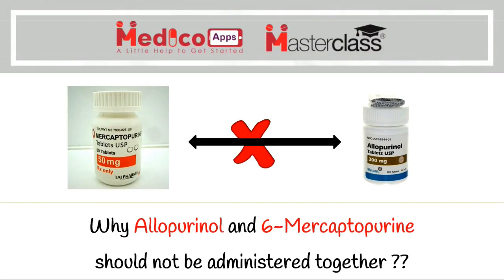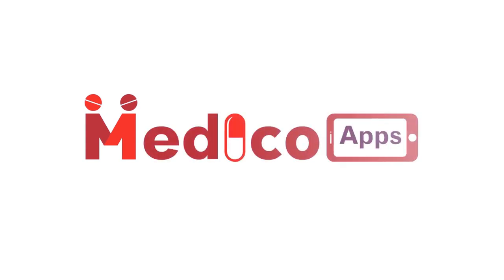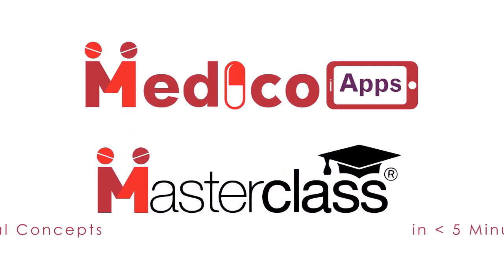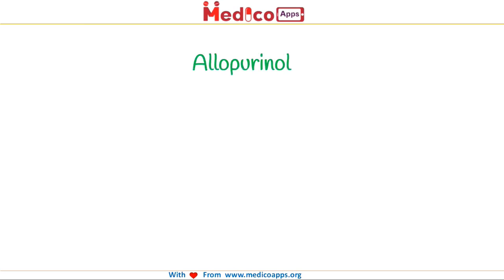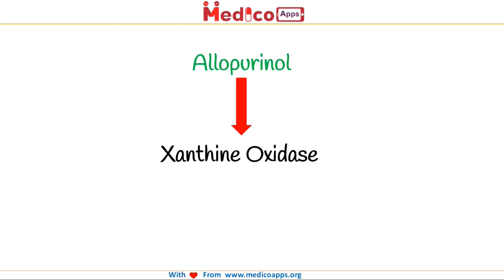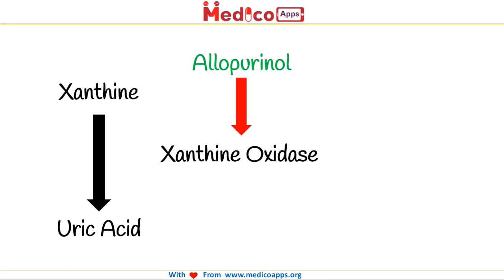Today, let us look at the clinical rationale why allopurinol and 6-mercaptopurine should not be administered together. Allopurinol is frequently co-administered with various anti-cancer drugs to reduce the risk of hyperuricemia. Essentially, it inhibits an enzyme called xanthine oxidase, which catalyzes the conversion of xanthine into uric acid. Since this enzyme is inhibited by allopurinol, the production of uric acid will reduce and hence hyperuricemia will be prevented.